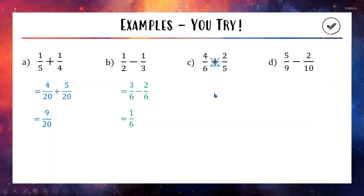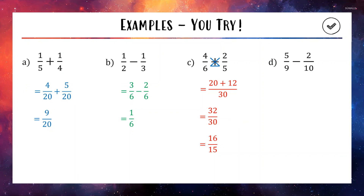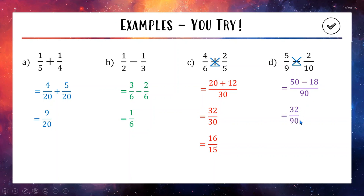For C using the fraction fish: 6 times 5 is 30 on the bottom. 5 times 4 is 20 for the top left. With a plus, 6 times 2 is 12. Up top we get 32 out of 30, which simplifies to 16 out of 15. For D with the fraction fish: the face gives 9 times 10 equals 90 on the bottom. Then 10 times 5 is 50. With a minus, 9 times 2 is 18. So 50 minus 18 is 32, giving 32 out of 90. Simplifying by halving both: half of 32 is 16 and half of 90 is 45, giving 16 out of 45, which is fully simplified.